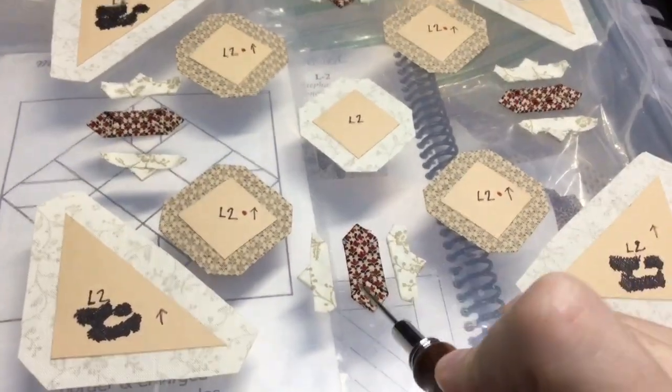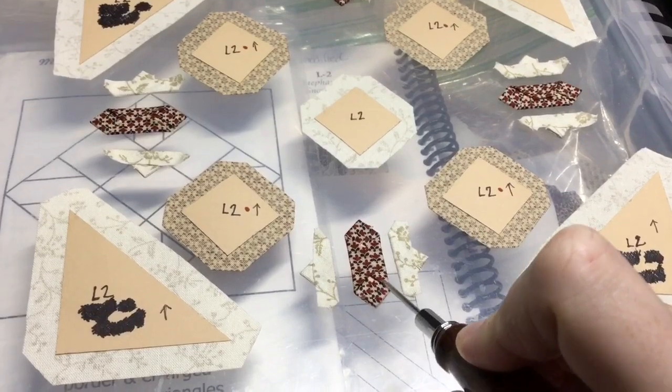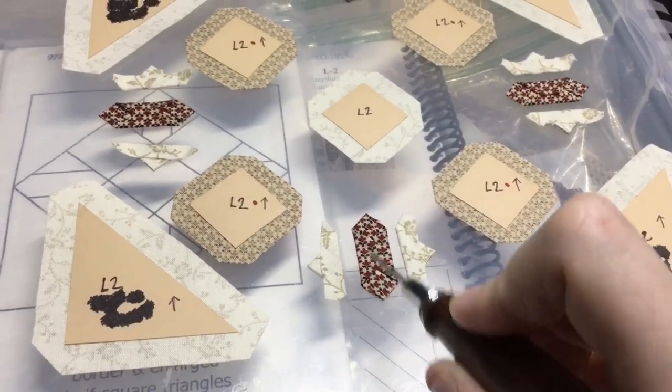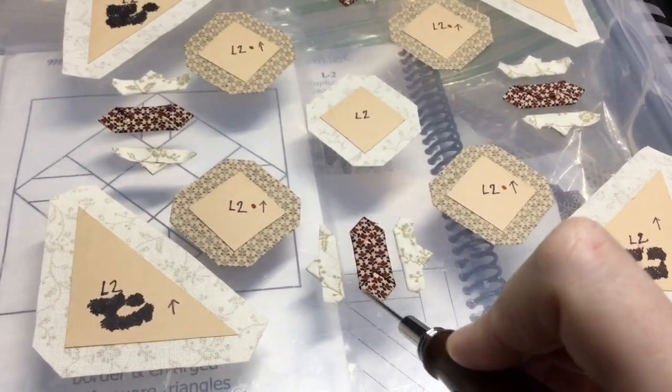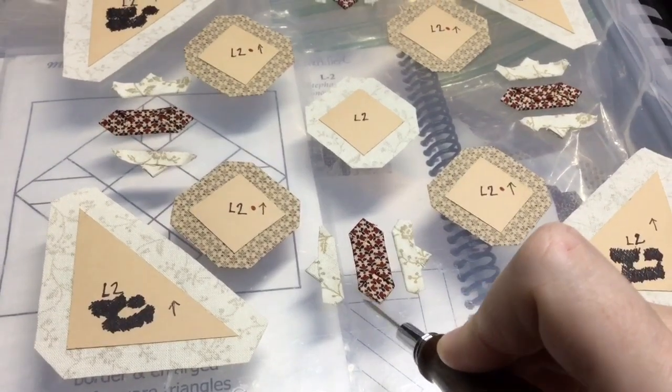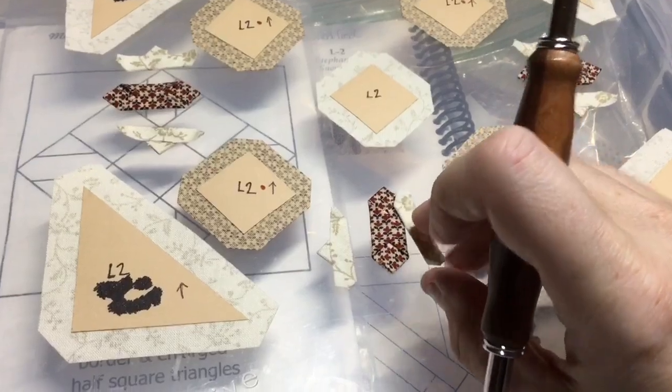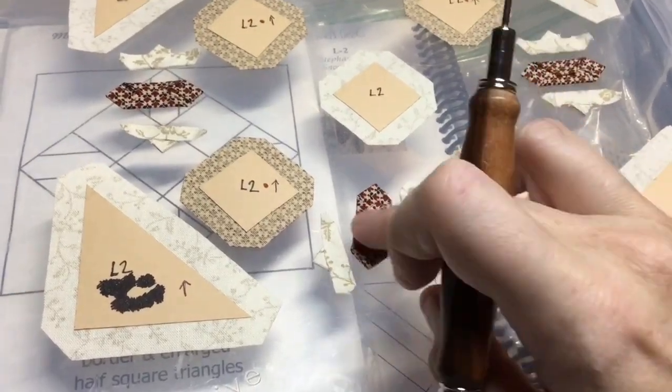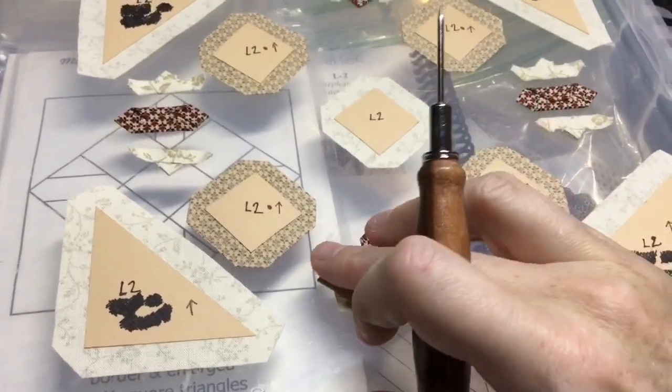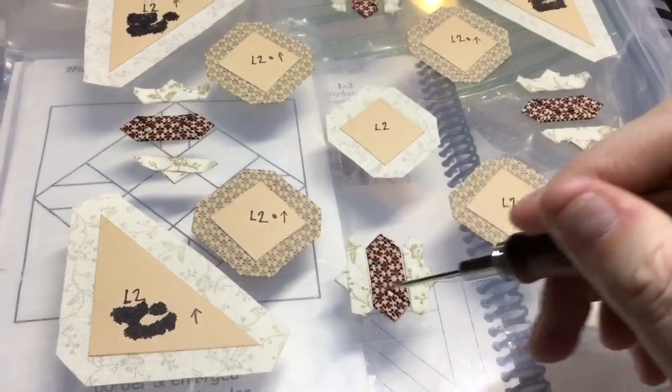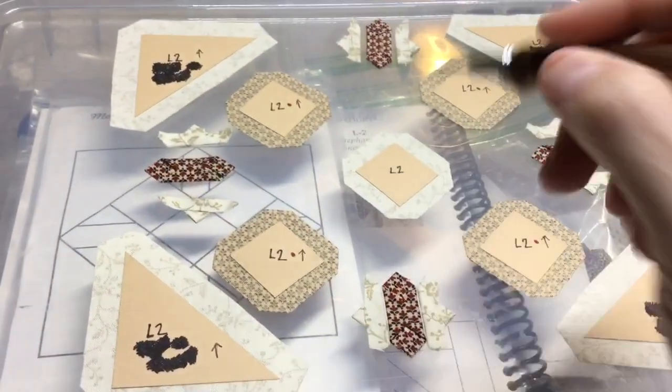So I've got my pieces basted. I decided to baste the tip before the sides because it gives me a sharper edge on these obtuse triangles. And so I've got these basted with the tags facing away from the little double arrow section. So I'm going to assemble these units and then I can baste my squares.